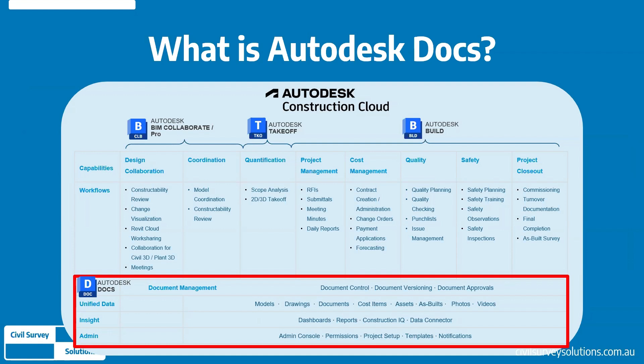Further to that, Autodesk Docs provides a higher level of document management and control, including versioning, file structure and naming standardization, markups, task notifications, and issue and review tracking, amongst many other features. It also opens the door to the rest of the Autodesk Construction Cloud — namely BIM Collaborate Pro, Takeoff, and Build.